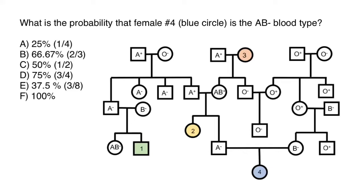Hello and welcome to Nikolai's genetics lessons. Today I have prepared an advanced level ABO blood group problem. We are going to analyze this pedigree in order to solve this problem. The question is: what is the probability that female number four, the blue circle, is AB negative blood type? We are talking about this female here.